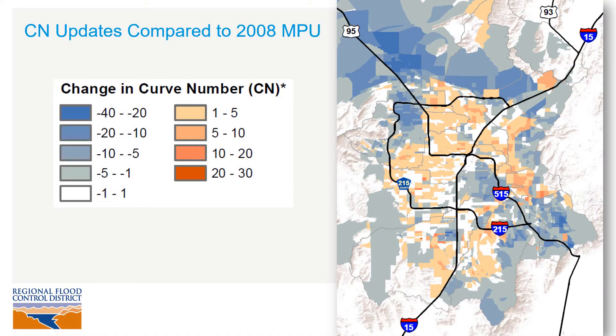During the 2018 MPU, we compared the updated curve numbers with the curve numbers previously computed during the 2008 MPU. This was helpful because curve numbers are a sensitive parameter in the hydrologic models, and all of the changes we've been talking about — like changes in land use, percent imperviousness, or soils data — all of that has an impact on the final curve numbers. The blue colors represent areas that generally saw a decrease in curve numbers, and the orange colors represent areas that generally saw an increase.